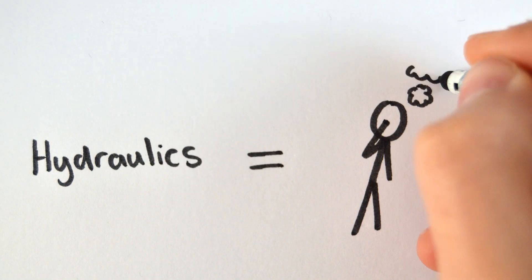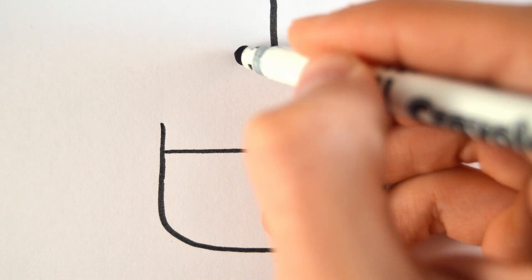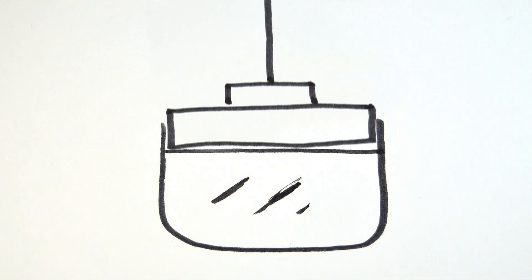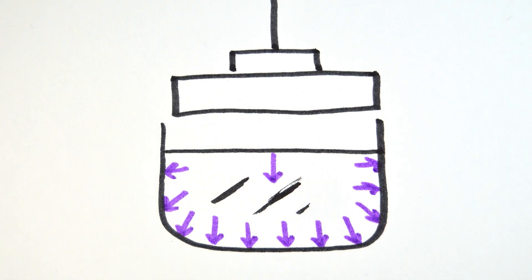Hydraulics might sound complicated, but all they are is another force multiplier. They utilise the fact that liquids are virtually incompressible. Which means when you compress them, the pressure you apply to one point of the liquid is transmitted equally in all directions.